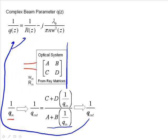And q_out is going to have a real part and an imaginary part. The real part of q_out gives us this. The imaginary part of q_out gives us this. So from q_out, we can calculate the radius of curvature and the waist at the output of the optical system.